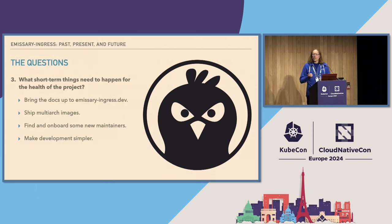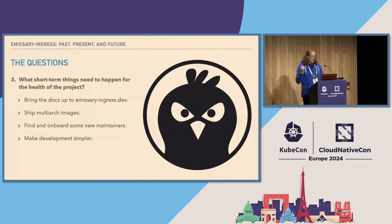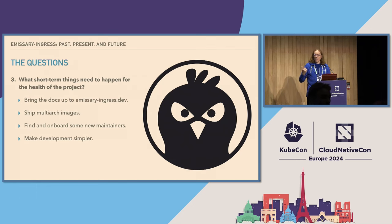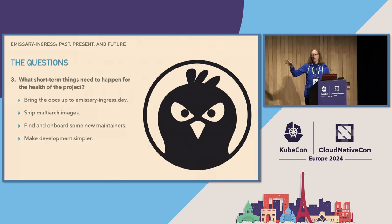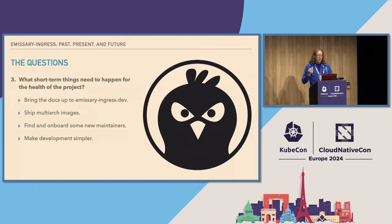This gets us to the question of: what should happen short term for the health of the project? One thing is to bring up the docs on emissary-ingress.dev. We're already on the website and already have the docs — there's some work on the build chain needed to get them published, but that's a straightforward short-term task. We need to ship multi-architecture images. This is a long-standing open issue where people are asking why we're not shipping ARM64. We also need to bring on some new maintainers and make development simpler.